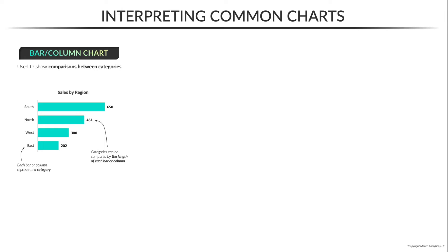One reason why people tend to favor bar and column charts over other visuals like pies or donuts is that it's very easy to see the relative differences between values, especially when they're sorted in a logical order. So interpreting this example, we can see that the south region drove the most sales with 650, while the east region drove the fewest with only 202.